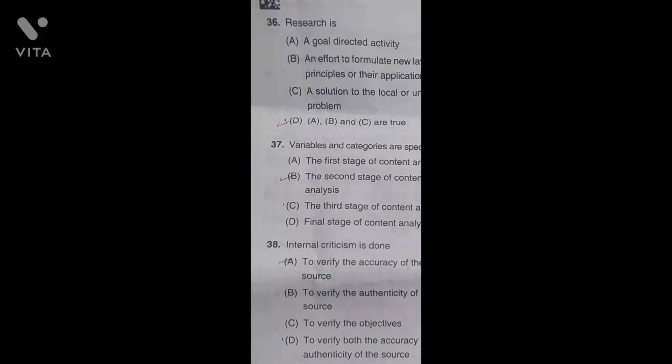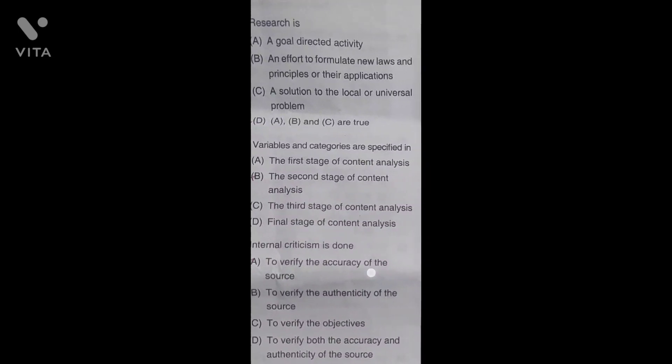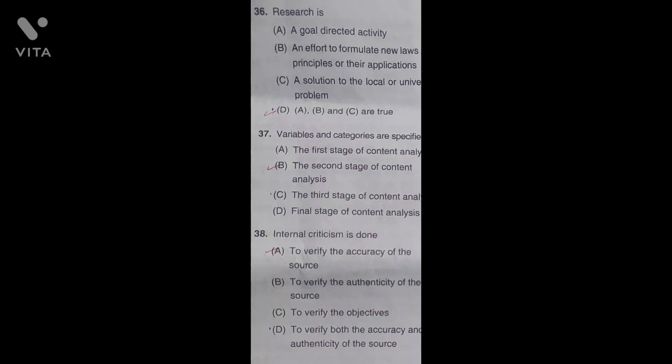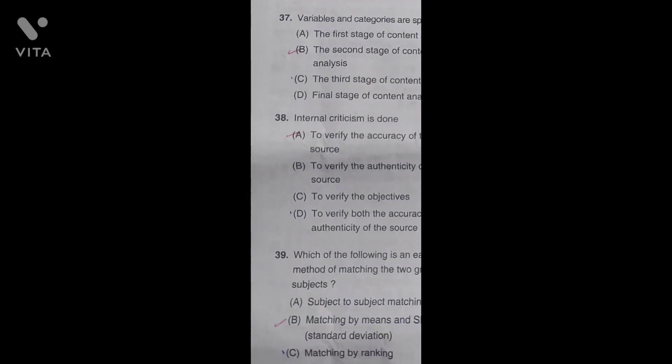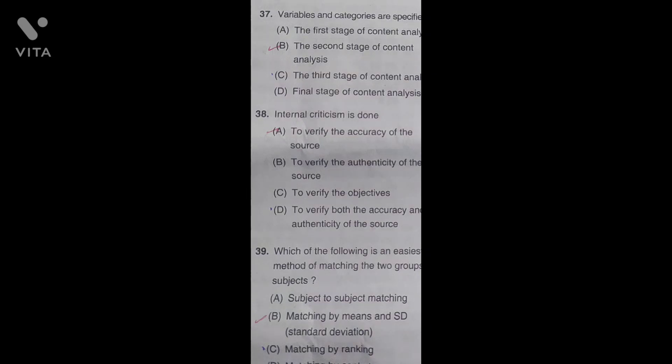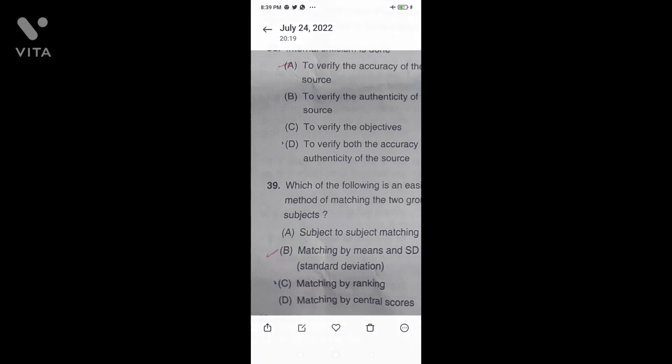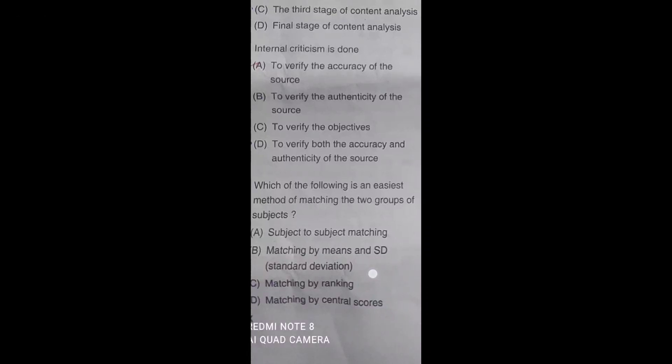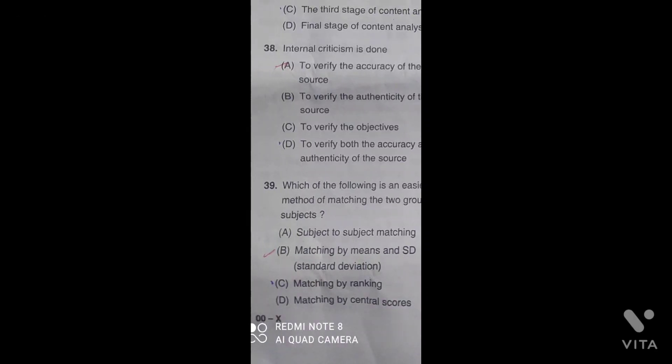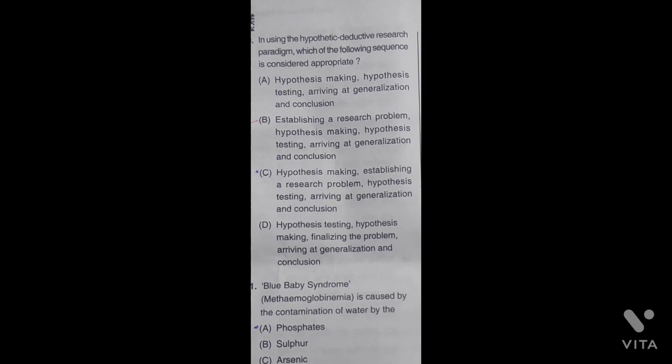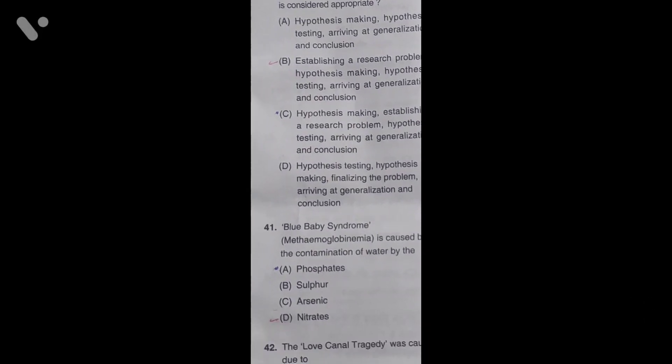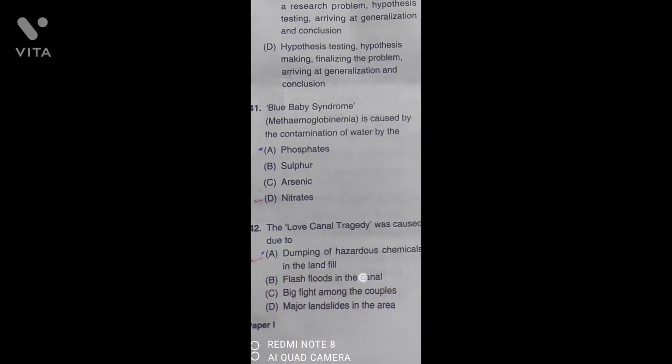Research is all of the three options, so D is the correct answer. Variables and categories are specified in the second stage. Internal criticism is done to verify the accuracy of the source. Which is the easiest method of matching the two groups of subjects? The correct answer is matching by means and standard deviation. In using the hypothetico-deductive research paradigm, the appropriate sequence is: establishing a research problem, hypothesis making, hypothesis testing, arriving at generalization and conclusion. Blue baby syndrome is caused by nitrites.